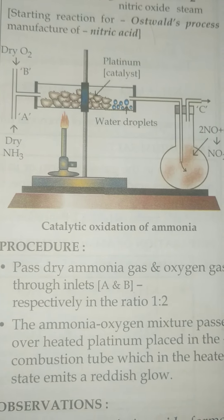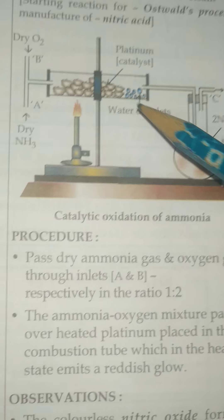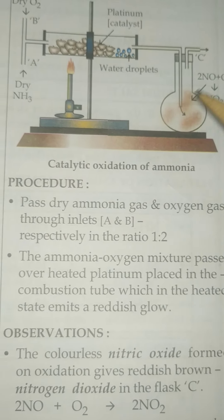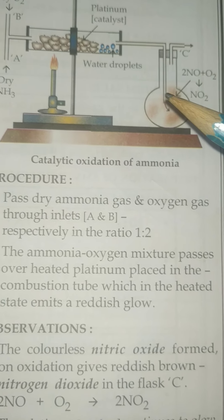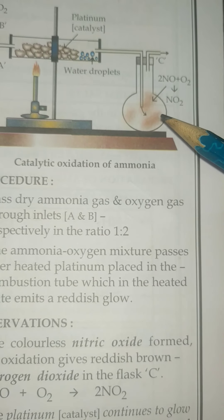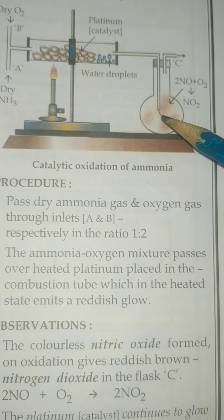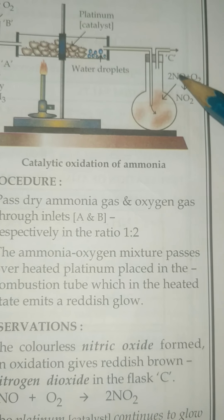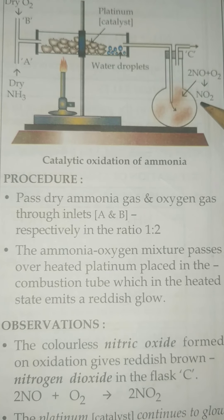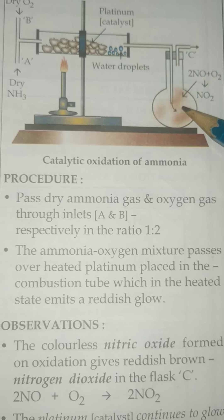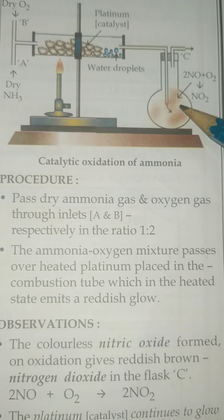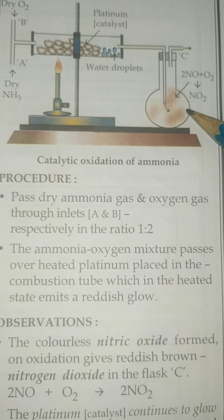Platinum here acts as a catalyst. The colorless nitric oxide is formed on oxidation. It will give a reddish-brown nitrogen dioxide in the flask. When nitric oxide reacts with oxygen, it forms nitrogen dioxide, giving a reddish-brown color. That reddish-brown color is an indication of nitrogen dioxide.